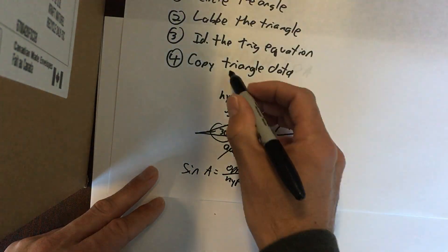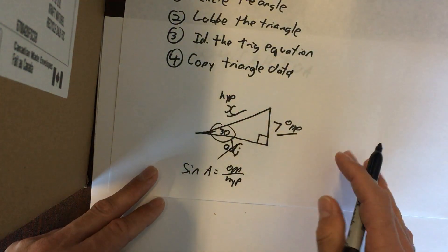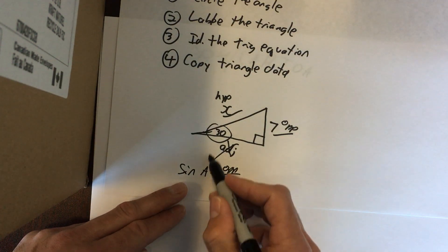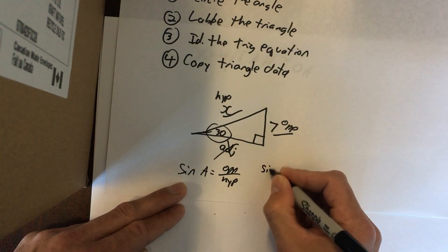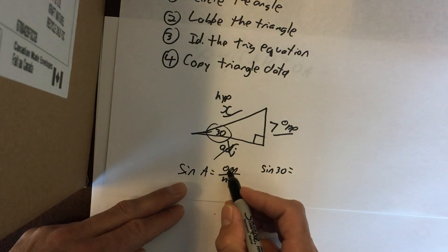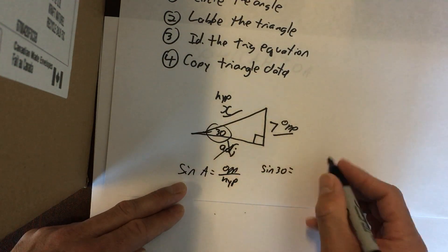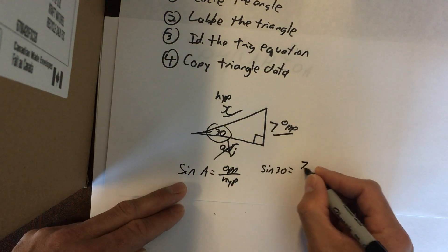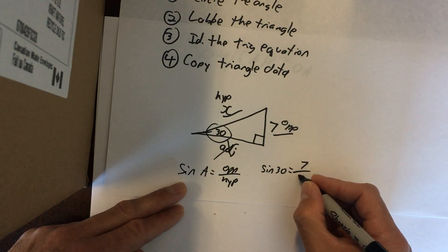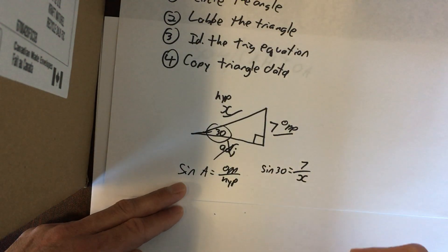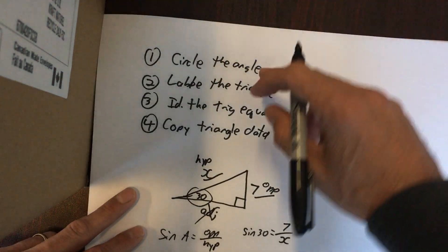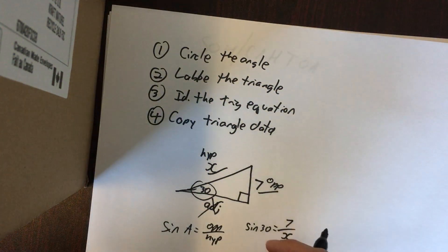Step four: copy the triangle data. Our angle is 30 degrees, so the sine of 30 degrees equals opposite over hypotenuse. The opposite has a length of 7 and the hypotenuse is our unknown side length, which we're calling X. If you follow these four steps, you're going to always set your triangles up correctly.